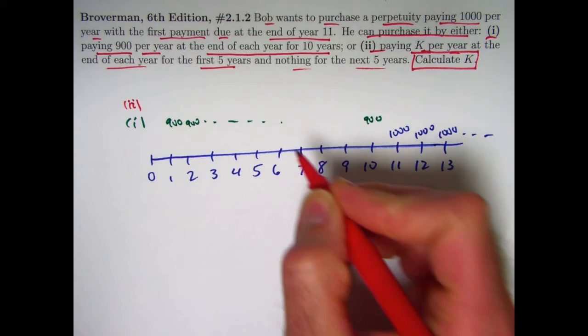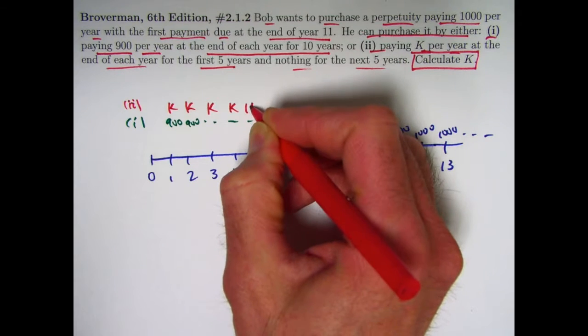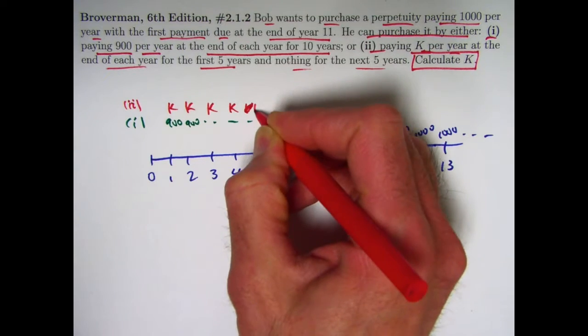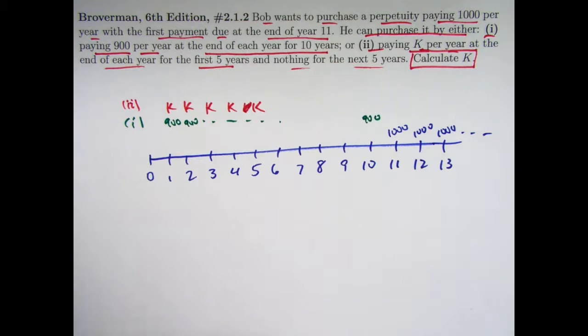And option two, pay $k per year at the end of each year for the first five years. $k, $k, $k, $k, $k, and nothing thereafter. Solve for $k.